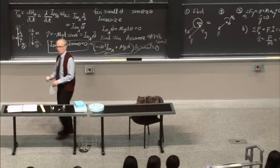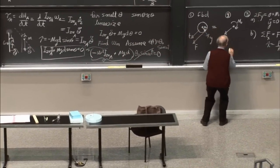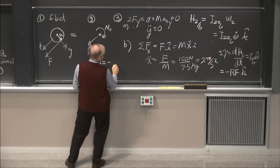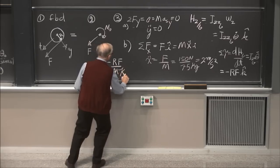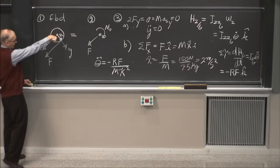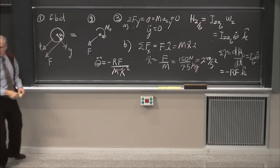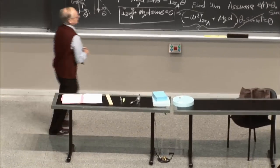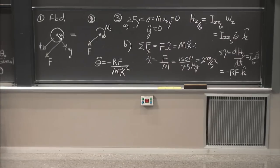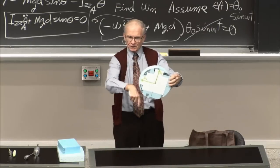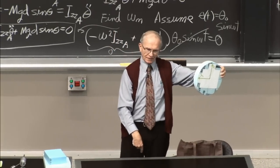So theta_double_dot = rF / (M*kappa²). The minus sign says it's rotating the expected way. Before we started: if you pull the string in this direction, will there be any motion in the y direction? A lot of people think it might move sideways because it's not loaded symmetrically. But it doesn't — the equations show y_double_dot = 0.